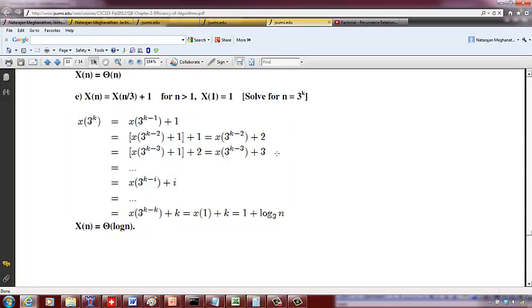Okay, and you can keep going until what you have is 1. So 1 is basically 3^0, so I can say it equals X(3^(k-k)), that makes it 3^0, which is 1.